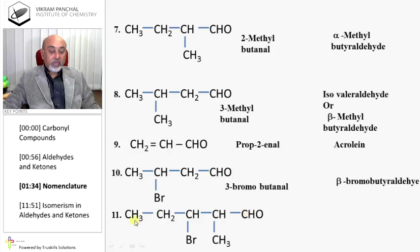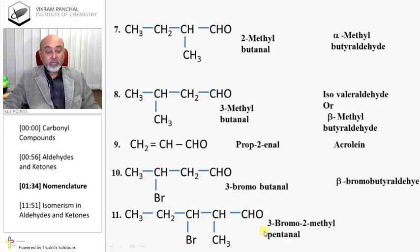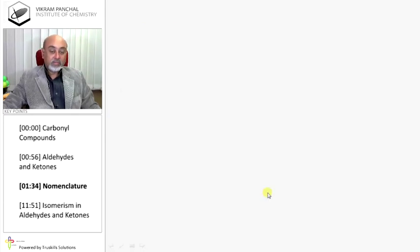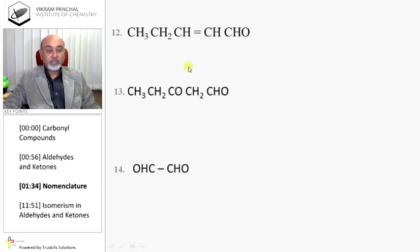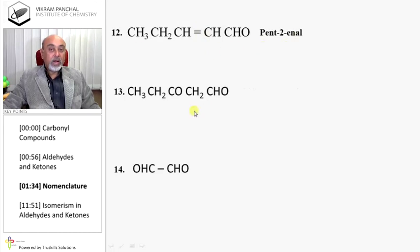The third carbon has bromine, so it is 3-bromobutanal, or beta-bromobutyraldehyde. There are total five carbons in the straight chain; the second carbon has a methyl group and the third carbon has bromine, so it is 3-bromo-2-methylpentanal. There is a double bond on the second and third carbon, therefore it is pent-2-enal.